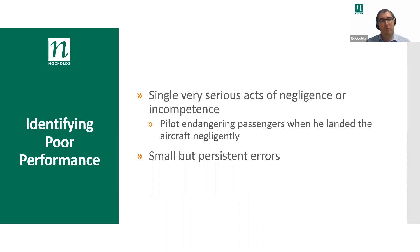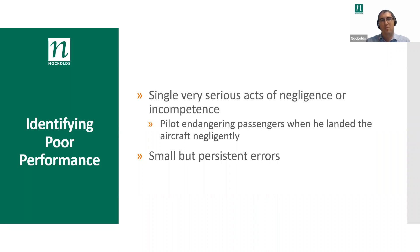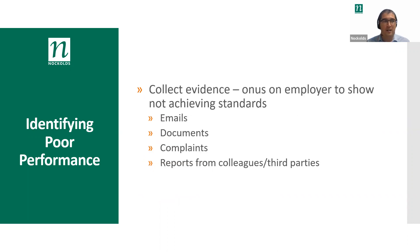More often, it is smaller persistent errors: failing to hit sales targets, making mistakes in work, typographical errors — those sorts of things that crop up that can't be said to be of an order of magnitude to justify dismissal. But they are annoying, they sap energy, they drain the quality out of the business, and they need to be addressed.